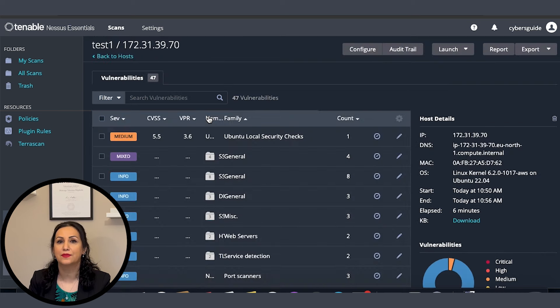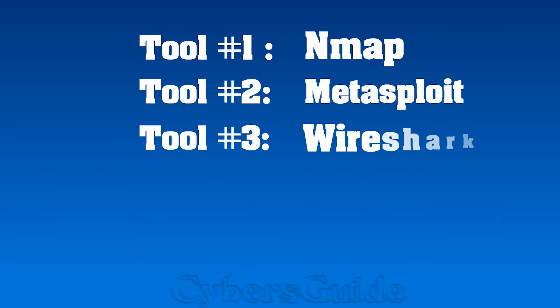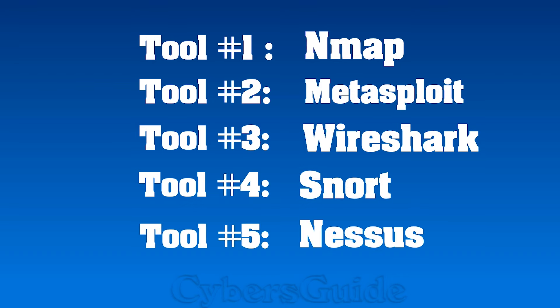To see the scan result, click on the scan name. On the right side, you see the scan details and the heatmap of the scan result. The heatmap is based on the vulnerability severity score. Click on Vulnerabilities — the vulnerabilities are listed based on their severity score. You can click on each to see the result. That was our top 5 hacking tools you must know.